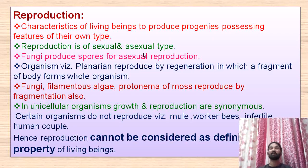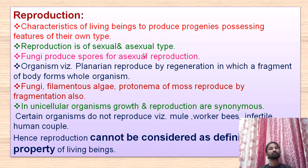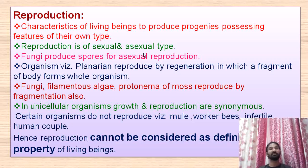Now coming to the second property of the living organism — reproduction. The characteristic of a living being to produce progeny possessing features of their own is reproduction. Every organism is involved in reproduction to produce their child or progeny. Reproduction is of different types: sexual reproduction and asexual reproduction. Fungal cells produce spores for asexual reproduction. The organism Planaria reproduces by regeneration, where a fragment of the body forms the whole organism. Fungi, filamentous algae, and protonema of moss also reproduce by fragmentation.